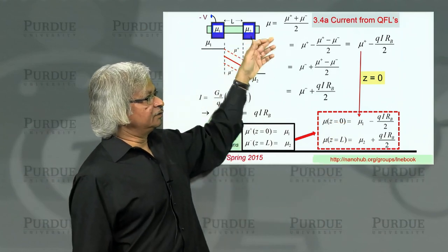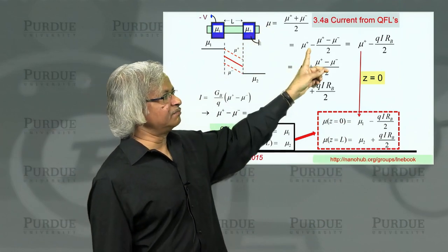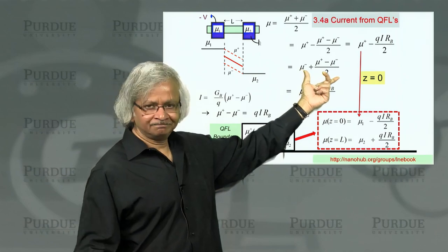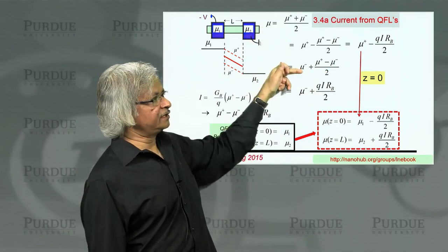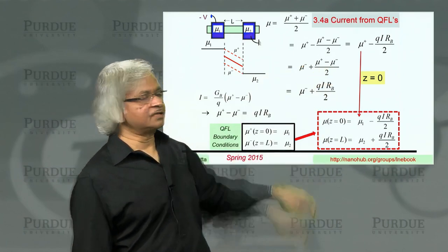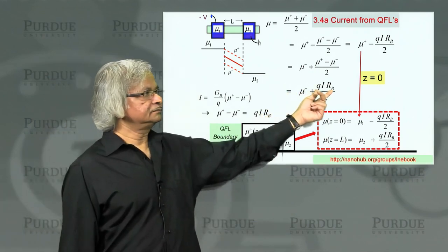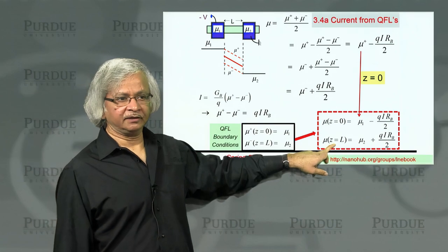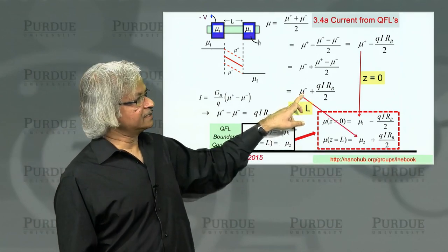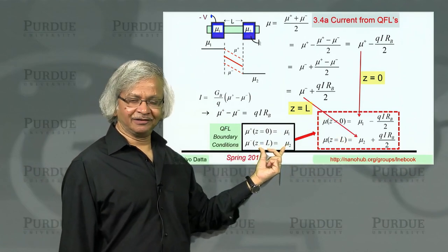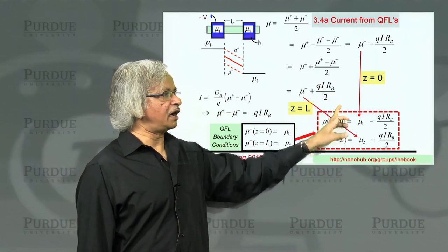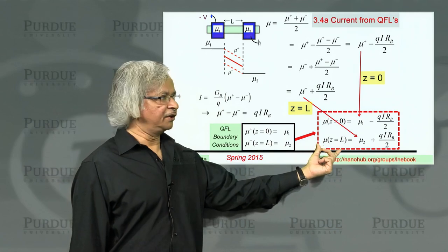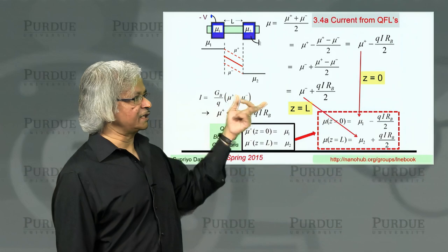Now, to get the other boundary condition, what you do is take mu and instead of writing it as mu plus minus this, you write it as mu minus plus this. That's also straightforward algebra. From here, you could write it this way, and then this difference of quasi-Fermi levels you can replace in terms of the current, again making use of this relation. Once you're here, the other boundary condition follows automatically. Because at z equals L, mu minus is mu 2 according to the second quasi-Fermi level boundary condition, and then plus qi R_B over 2. Main point: what we obtained in the last lecture gives you these boundary conditions as long as you accept this relation.